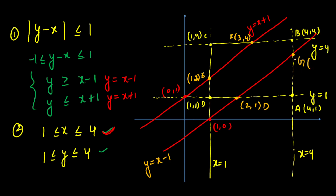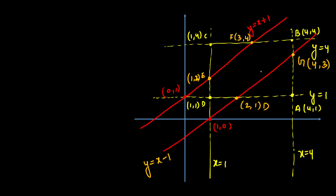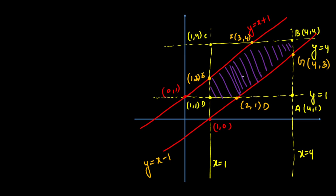Point G lies where X = 4 meets Y = X - 1: putting X = 4 gives Y = 3, so G = (4,3). Now we have all the points needed. Any coordinate taken within the shaded region between the two parallel lines inside the sample space square represents a case where A and B will meet in between.